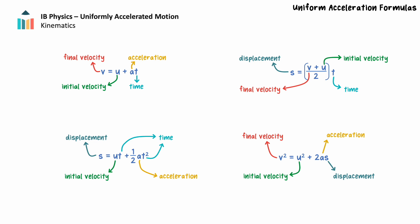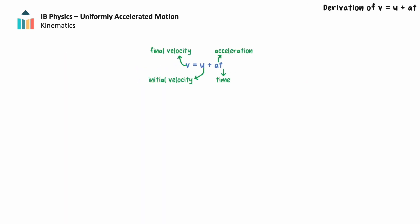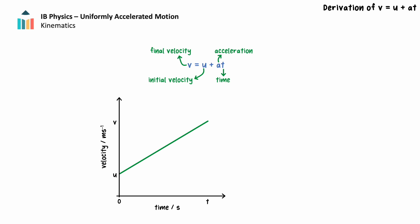We'll briefly walk through the derivation of these formulas. First, we'll begin with the formula: final velocity, v, is equal to initial velocity, u, plus the product of acceleration, a, and time, t.